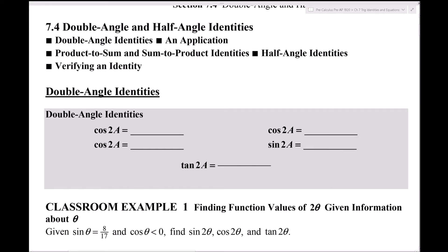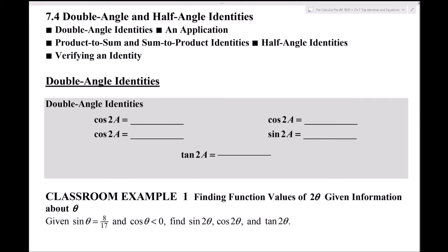Double angle identities for sine, cosine, and tangent are directly related to the sum and difference identities from section 7.3. There are three variants for cosine — cos(2a) appears three times — because we can derive one using the sum formula and then manipulate the result two more ways.